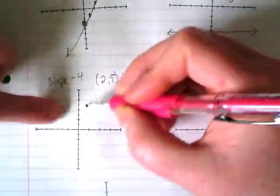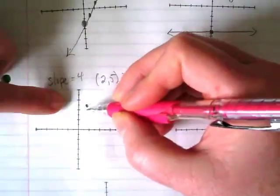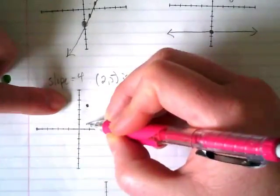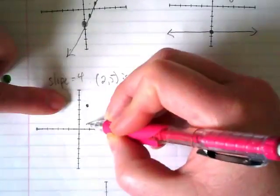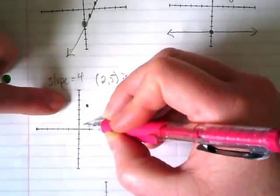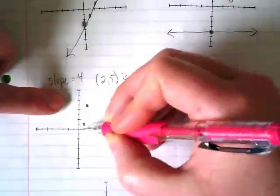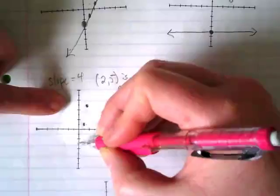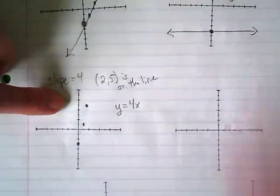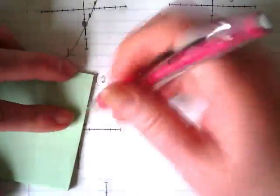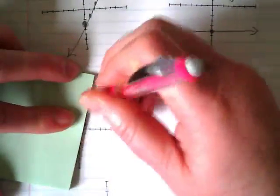I can't go up 4 because my graph doesn't go high enough, but I can go down 4. 1, 2, 3, 4. Should I go left or right to make this a positive line? To make a positive line, you have to go left. From left to right, I have to go up. So it's going to go to the left 1, so I'm here. And then I'm going to count down 4 more. 1, 2, 3, 4. And to the left 1, there's my y-intercept. Your y-intercept is negative 3. It is, negative 3. So it's a pretty steep line.